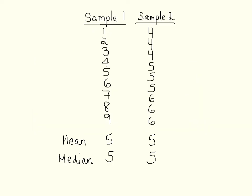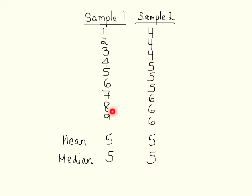Here's an example of two different data sets that have the same mean and the same median — so the central tendency of these two sets of data is exactly the same. However, if you look at the numbers that make up the sets of data, you see that they're very different. Sample one has a lot more different values than sample two, so the mean and median are in some sense less representative in sample one, where observations are much further from the central tendency.